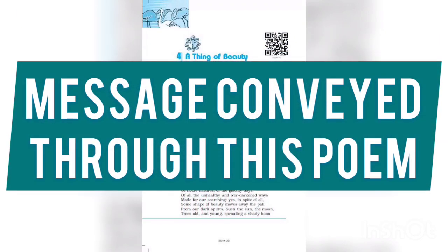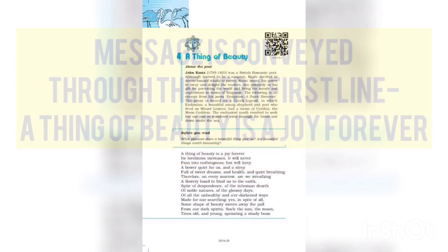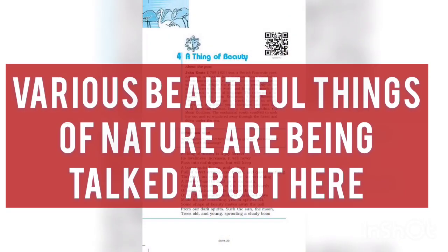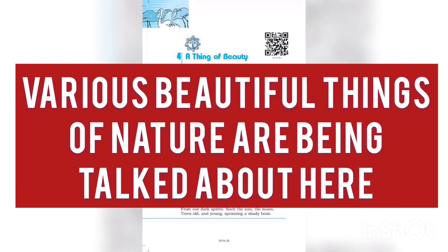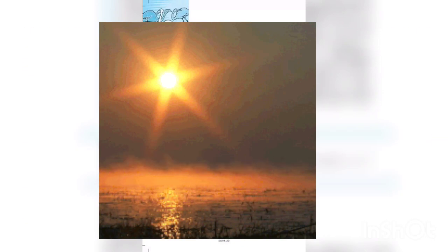The message that John Keats conveys, starting from the first line 'A thing of beauty is a joy forever,' is that beautiful things always give us joy — it doesn't fade, it doesn't decrease. Beautiful things include not only the sun and moon, but also old and young trees, flowers, streams of clear water, cooling effects in summer, roses and musk roses. Beautiful objects of nature are a source of joy forever — this is the basic message Keats conveys.